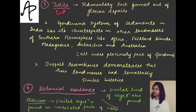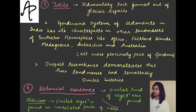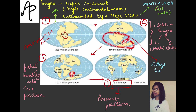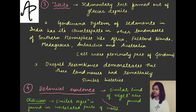Another evidence is about tillite — sedimentary rocks formed out of glacier deposits. In the Gondwana system of sediments, remember that the southern part of Pangaea breaking down was Gondwana land and the northern part was Laurasia. India has been a part of the Gondwana system. The Gondwana system of sediments in India has its counterparts in other landmasses of the southern hemisphere.